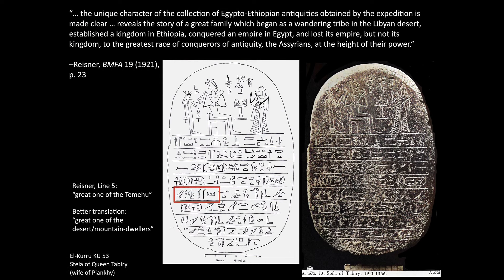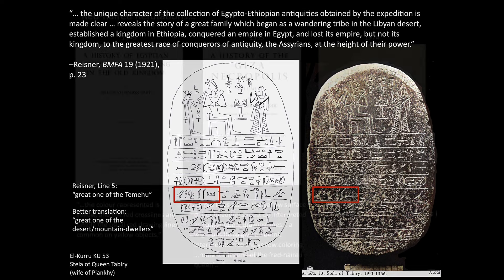One of Reisner's finds prior to finding Marisanq in 1927 helped clinch the Western or Libyan connection for him. This was in Nubia — the Stele of Tabiri from El-Kuru, one of Pianki's queens. In line five, he thought he could read the queen's name as 'the Great One of the Tjehenu,' otherwise known as the Libyans. A better reading would take the Tjeset sign seriously and interpret it as the Tjeset desert or mountain dwellers instead, which largely wipes that interpretation away — but for Reisner, it was confirmation.